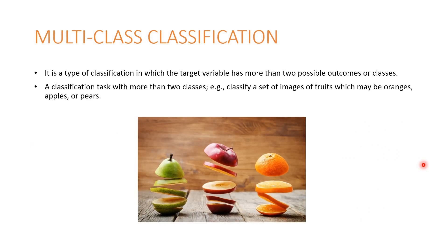Multi-class classification is the next type, in which the target variable has more than two possible outcomes or classes. It is a classification task with more than two classes. For example, you are given a set of images of fruits which may be orange, apple, banana, or pears — more than two — and that's called multi-class classification.